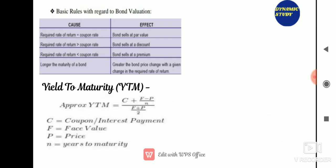Basic rules with regard to bond valuation: when the required rate of return is equal to the coupon rate, the bond will sell at par value. When the required rate of return is greater than the coupon rate, the bond sells at a discount. When the required rate of return is less than the coupon rate, the bond sells at a premium. Another important point: the longer the maturity of a bond, the greater the bond price change with a given change in the required rate of return.